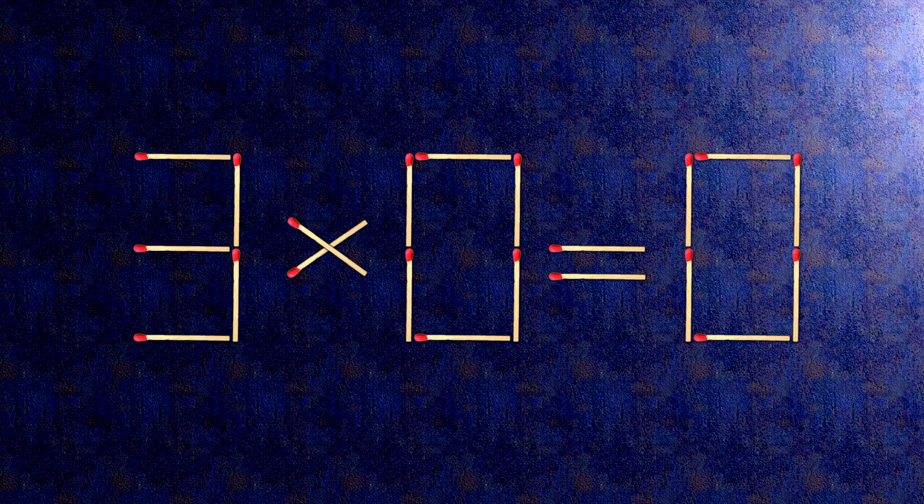Now, when we check the condition: three times zero is zero. The task is done and the puzzle is solved.